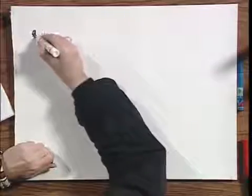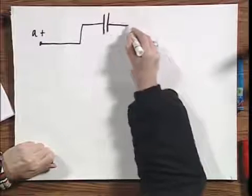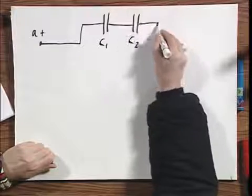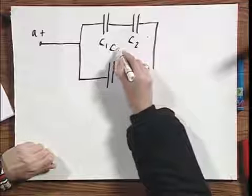So let's now go to problem number one and apply some of what I just told you. So here we have point A, positive, C1, C2, rather complicated, C3.